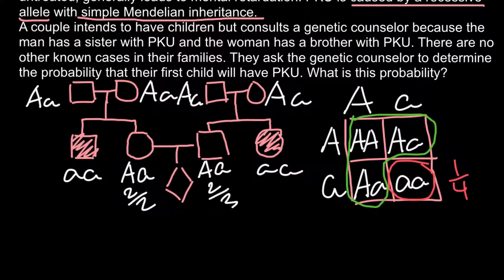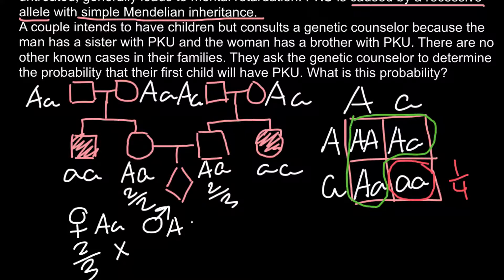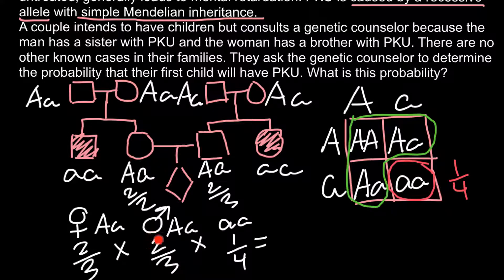Now we are ready to calculate the probability for this couple to have an affected child. The female has a probability of 2/3 to be heterozygous, and we multiply by the probability for the male to be heterozygous, which is also 2/3. If they are both heterozygous, the probability of an affected child is 1/4. So we multiply: 2 × 2 × 1 = 4 in the numerator, and 3 × 3 × 4 = 36 in the denominator, giving us 4/36.